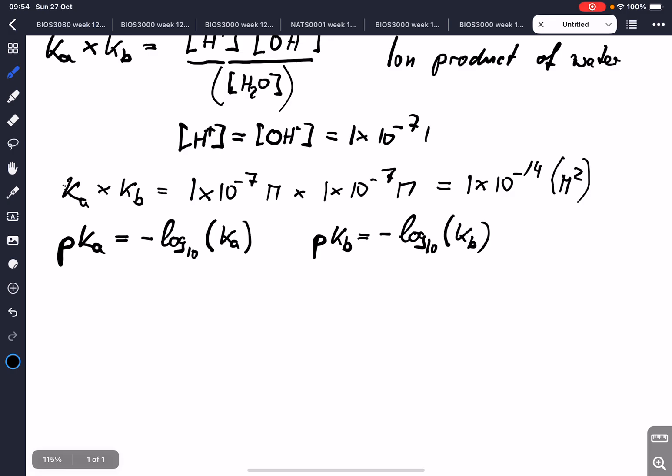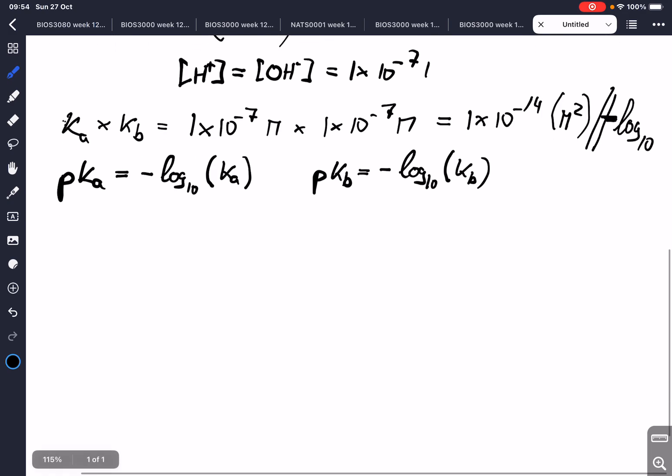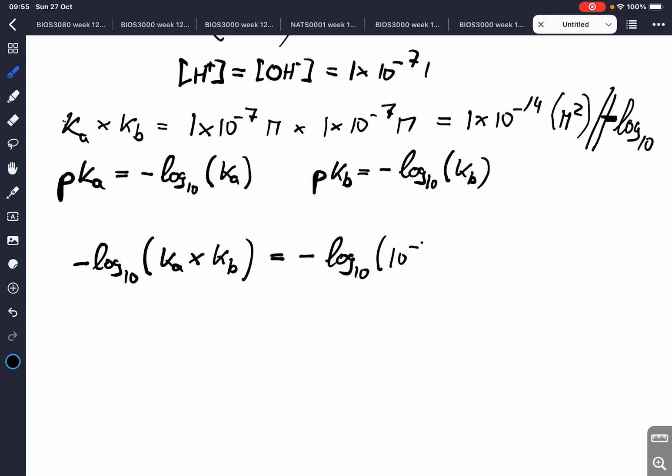So what does that give us? What we actually can do now is, we multiply or we take both sides log 10. And we take that negative log 10. So, what we get on the left hand side is, negative log 10 of Ka times Kb equals negative log 10 of 10 to the minus 14. Now, we very quickly can see that on the right hand side, negative log 10 of 10 to the minus 14 gives us 14.